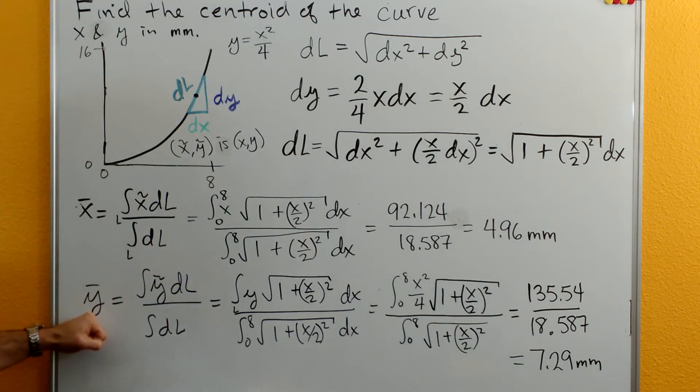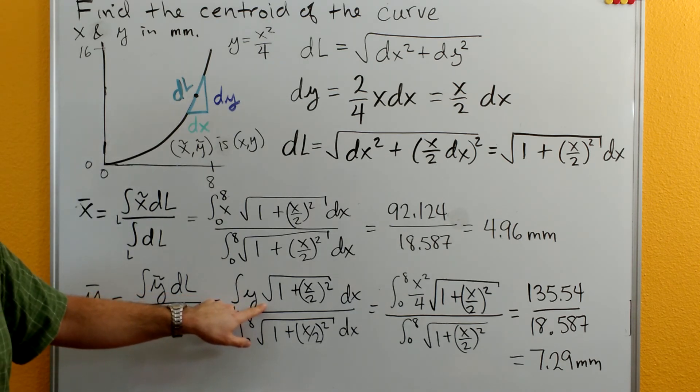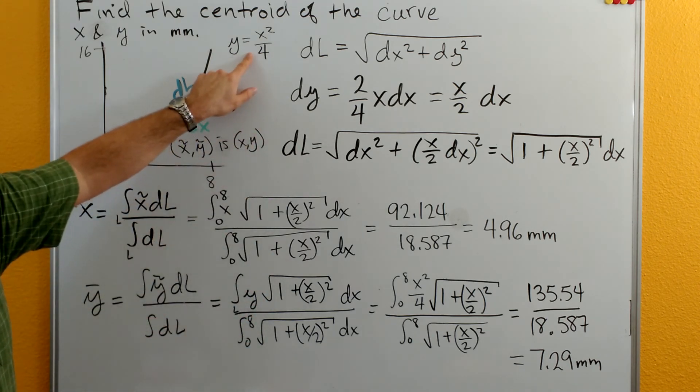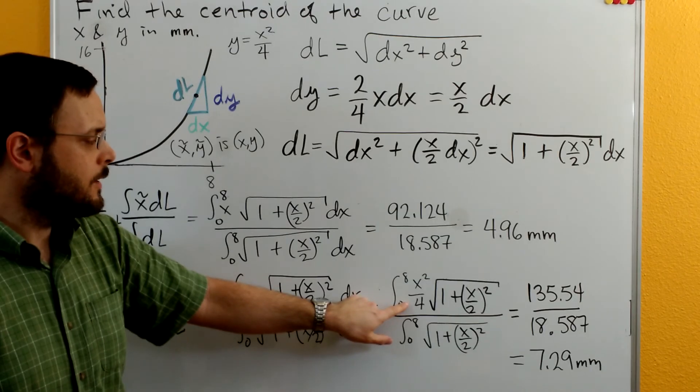And then for the y it's really the same thing. We plug in a y times dl which gives us a y here. We've got to get rid of that y so all we have is x's. We've got y is equal to x squared divided by 4. Plug that in there.